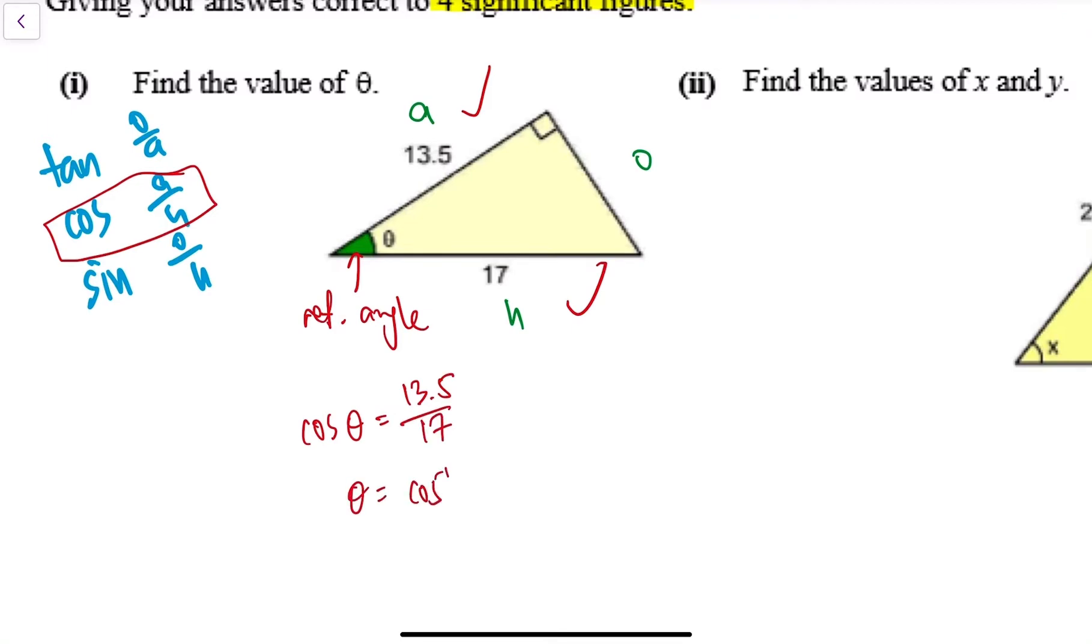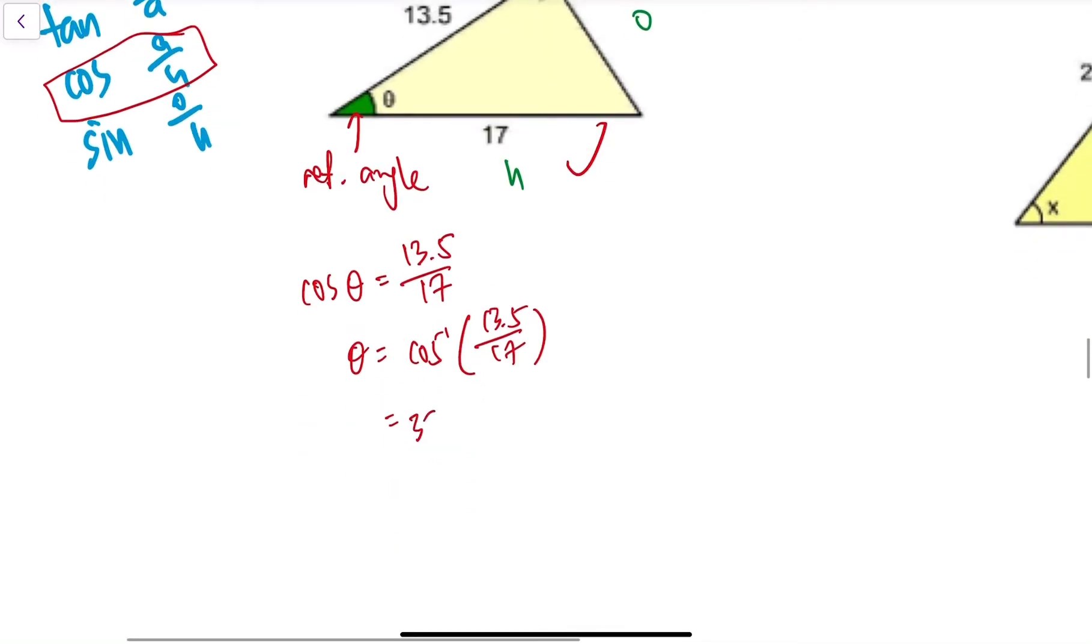Then if I want to find theta, I do the inverse: cosine inverse of 13.5 divided by 17, which gives me 37.42806 to six significant figures, and round it off to 37.43 degrees for four significant figures.